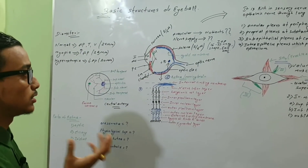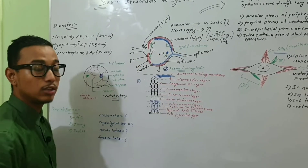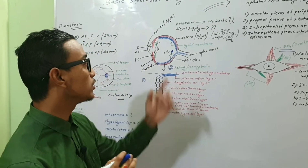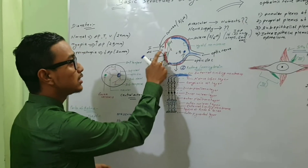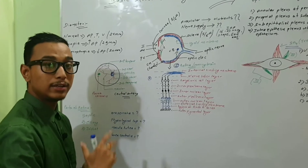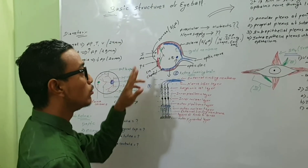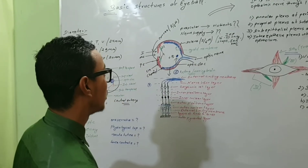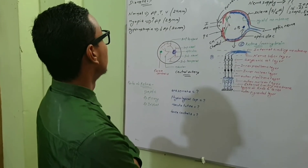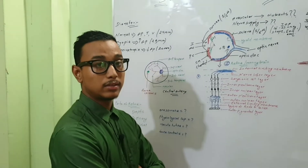Now let's discuss the chambers or segments of the eyeball. Posteriorly there is the posterior segment, also known as the vitreous body, containing a fluid called vitreous humor. The anterior segment extends from the cornea to the lens and is divided into anterior and posterior parts by the iris; it contains a fluid known as aqueous humor.